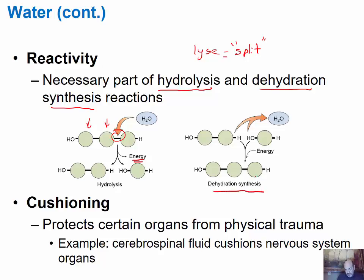For dehydration synthesis, we remove the equivalent of water — we take a hydrogen from one molecule and an OH from another, which together form water, and the end result is a new covalent bond and a larger molecule. Energy is required for this process, and these are referred to as anabolic, or building, reactions. You need both types to stay alive — breaking down food molecules and using that energy to do biological work inside cells.